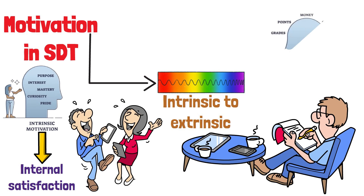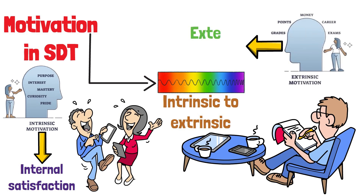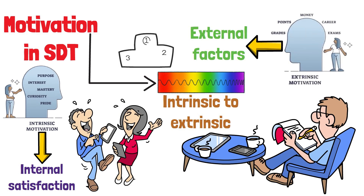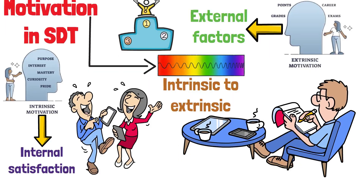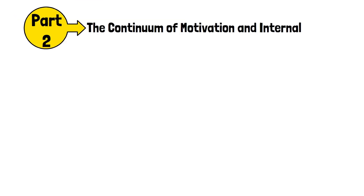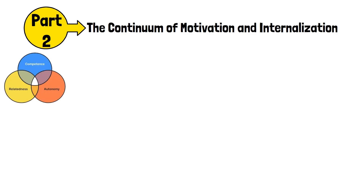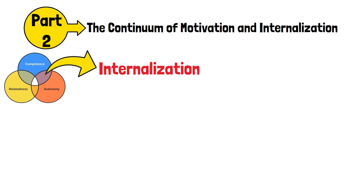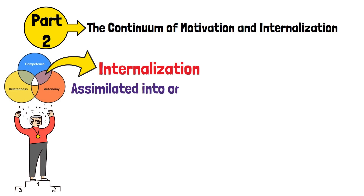Intrinsic motivation stems from internal satisfaction, such as engaging in activities purely for the enjoyment or interest they provide. Extrinsic motivation, by contrast, is driven by external factors like rewards or obligations. Part 2: The Continuum of Motivation and Internalization. The theory emphasizes the process of internalization, where external motives are gradually assimilated into one's self-concept.